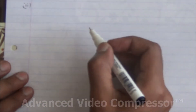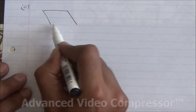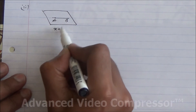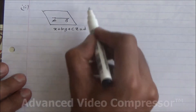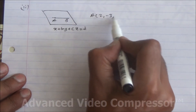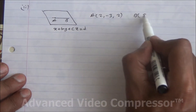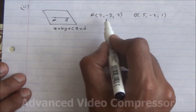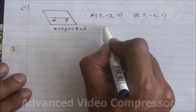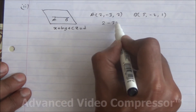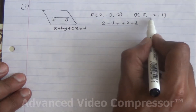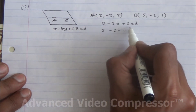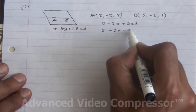For the second part, there is a second plane Q containing the line AB. The equation of plane Q is x + by + cz = d. The coordinates of A are (2, -3, 2) and B are (5, -2, 1). Substituting A into the equation gives 2 - 3b + 2c = d. Substituting B gives 5 - 2b + c = d.